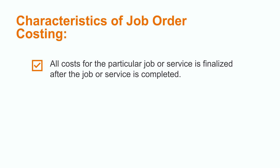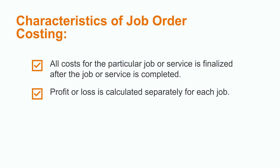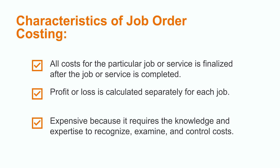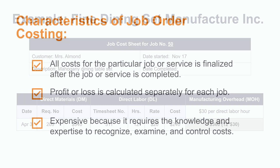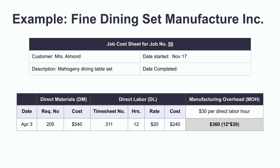Number four, all the costs for the particular job or service are finalized after the job or service is completed. Number five, profit or loss is calculated separately for each job. Number six, job order costing is expensive because it requires knowledge and expertise to recognize, examine, and control costs.